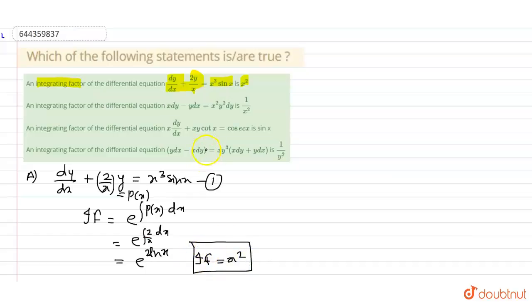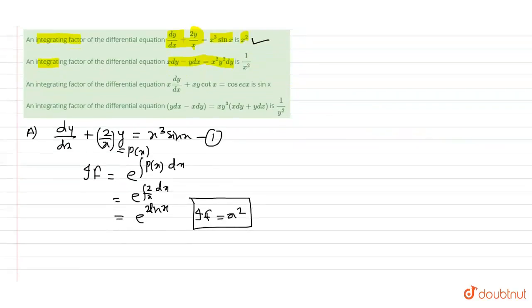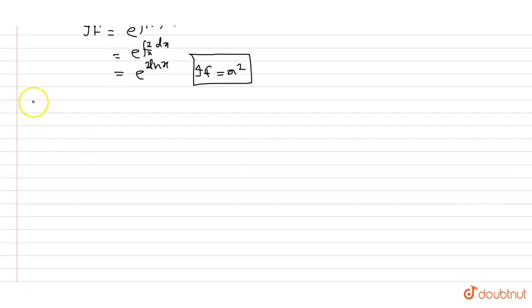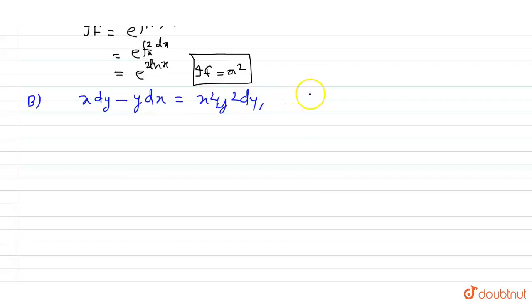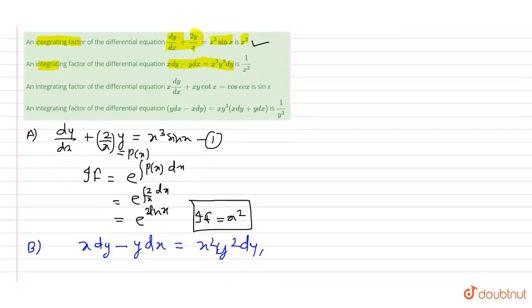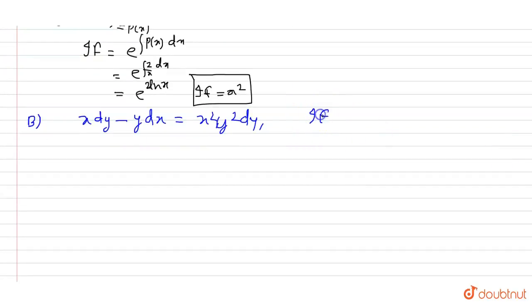So if we check option A, we find option A is correct. Now we discuss option B. Option B is: an integrating factor of the differential equation x dy minus y dx equals x²y² dy. We have to check whether it is true or false, and whether the integrating factor is 1/x².